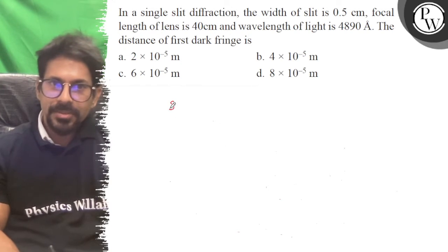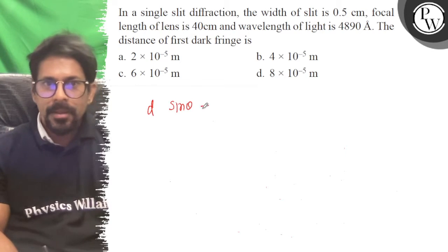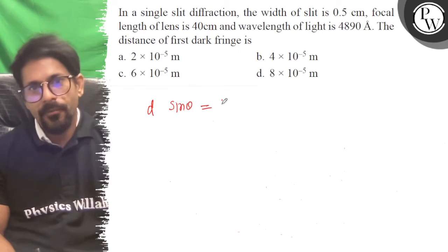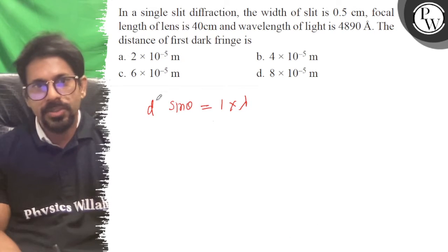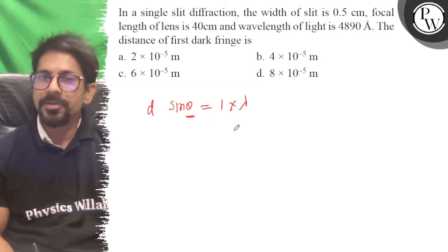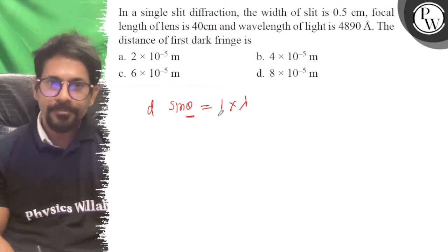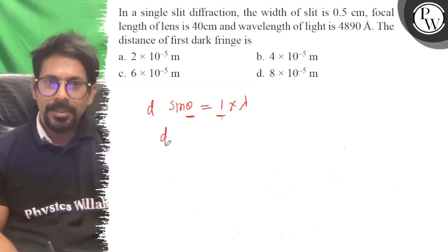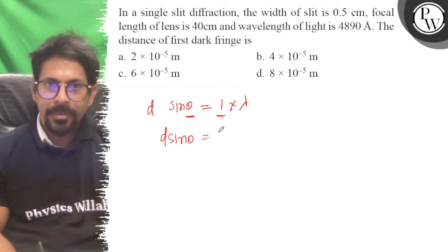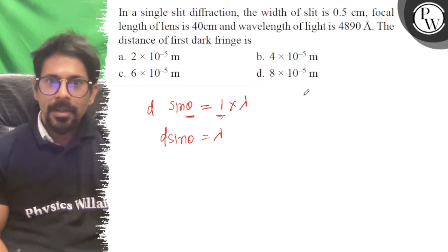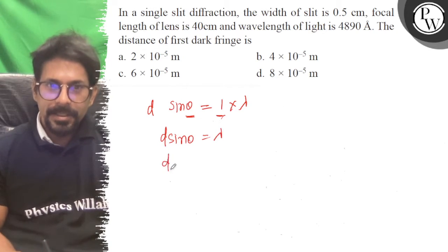So, we know that d·sinθ equals 1 into lambda, where theta is the angular position of the first minimum. So, d·sinθ is equal to lambda, and d·tanθ is equal to lambda, which we can write.